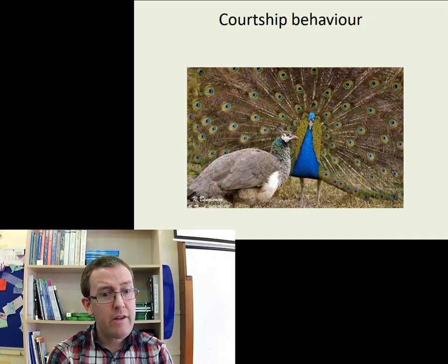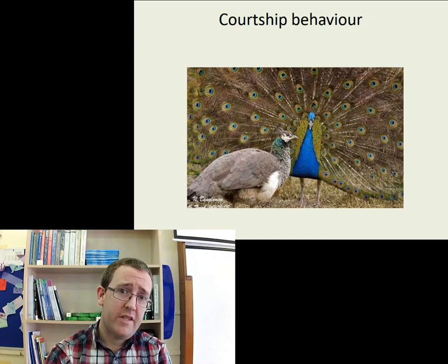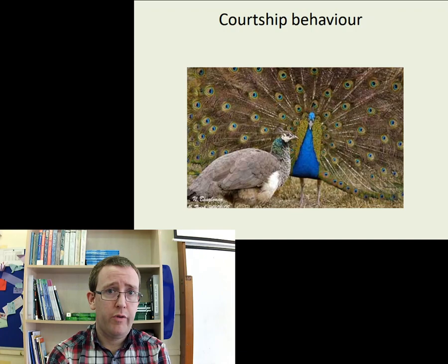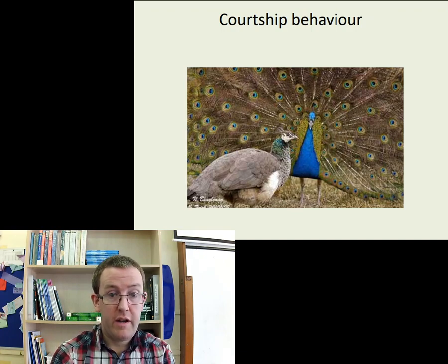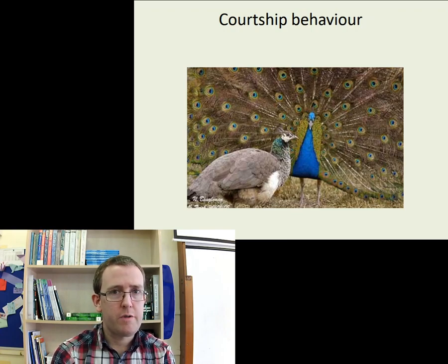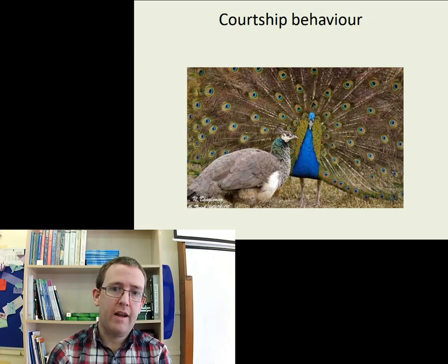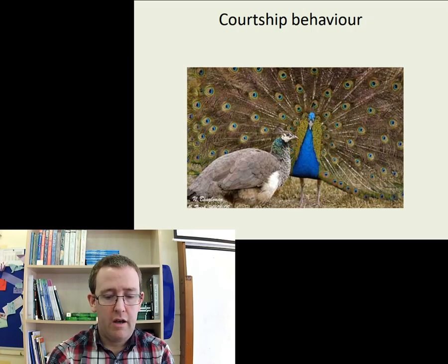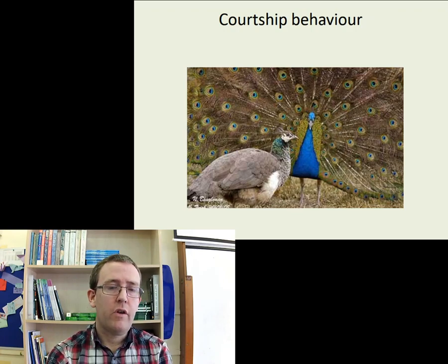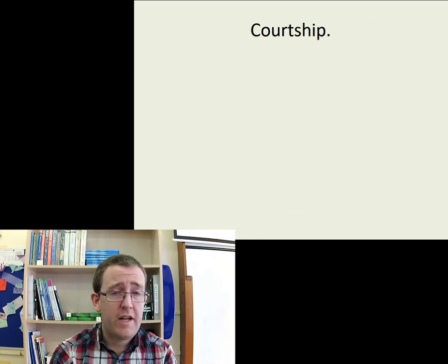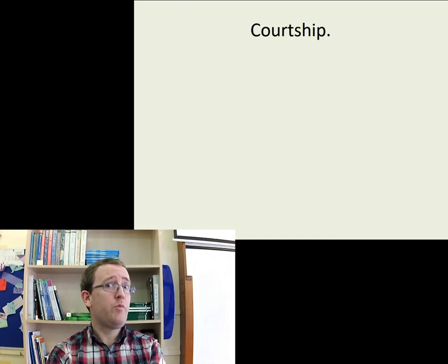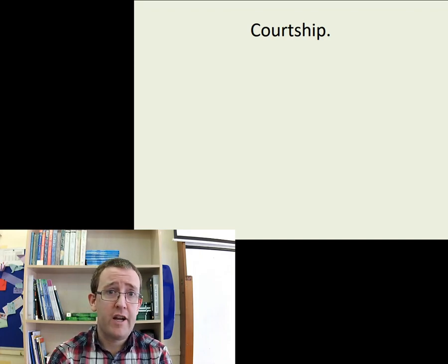So how do organisms know that another individual will produce viable offspring? One major way they know that is courtship behaviour. The peacock is probably the most famous example — the big tail signals to the female that this is a fit, reproductively viable male. Courtship behaviour has to do a number of different things — it might sound obvious, and it's always hilarious to liken these to human courtship behaviour, but I'll leave that to your own imaginations.